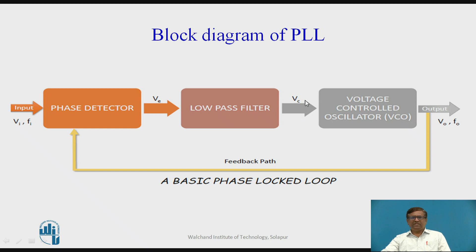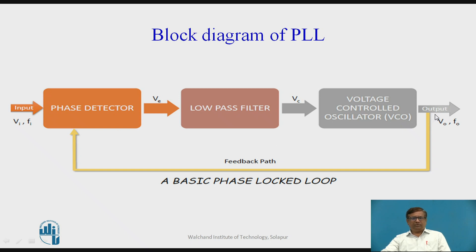As the input voltage varies, the output frequency of the VCO also varies, and it tries to match this output frequency with the input frequency. In other words, the phase detector output — the error voltage — tries to become 0, and we get the output locked to the input frequency.